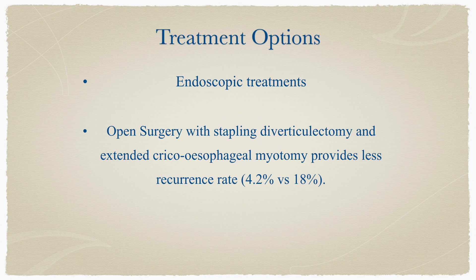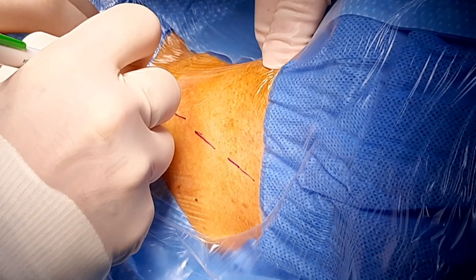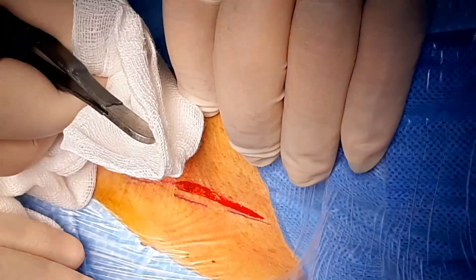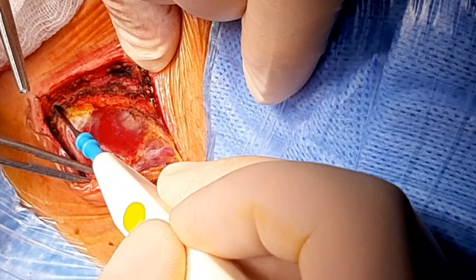The treatment options are endoscopic or open surgery, but open surgery offers a lesser risk of recurrence. Therefore, we offer diverticulectomy by open surgery with an incision starting on the medial margin of the sternocleidomastoid, a 5–6 cm incision in the same direction as the muscle.